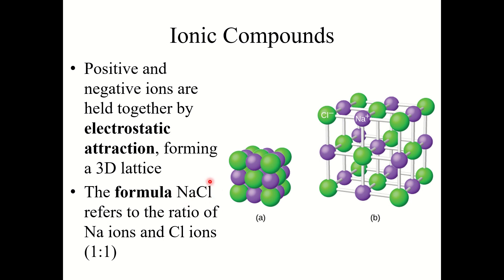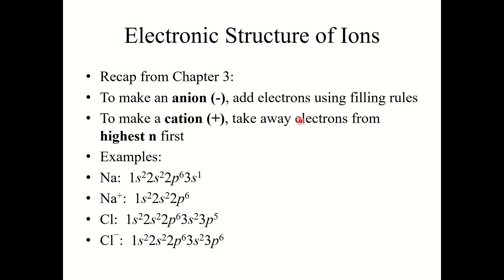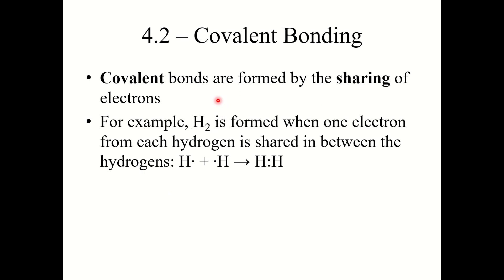NaCl means one sodium ion for every one chloride ion. Just to recap the electronic structure of ions: recall from Chapter 3, when you make an anion, you add electrons using filling rules, and when you make a cation, you take away electrons from the highest energy level first. Just be careful with transition metals if you're making a cation. That is actually it for Section 4.1.